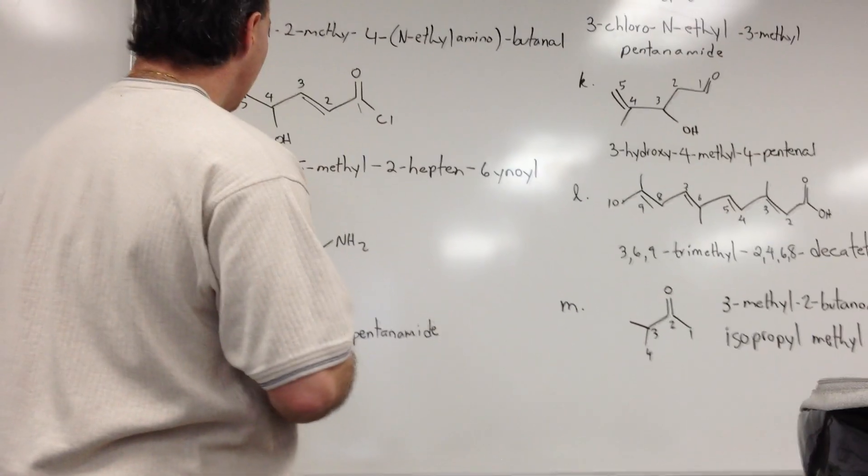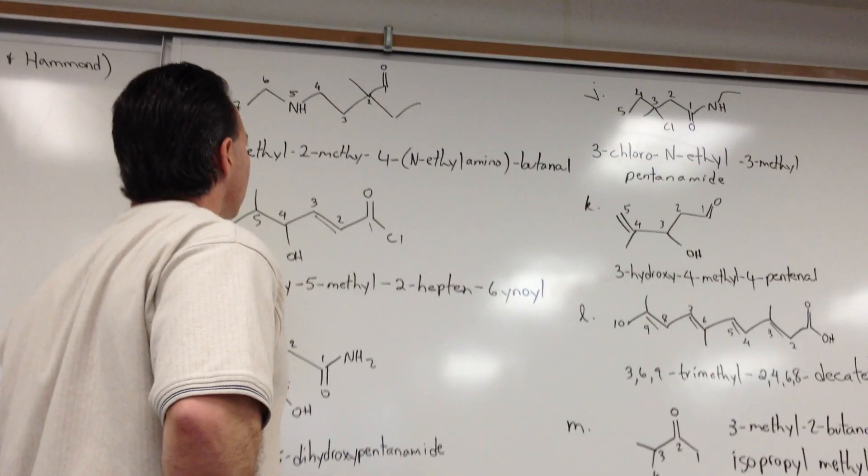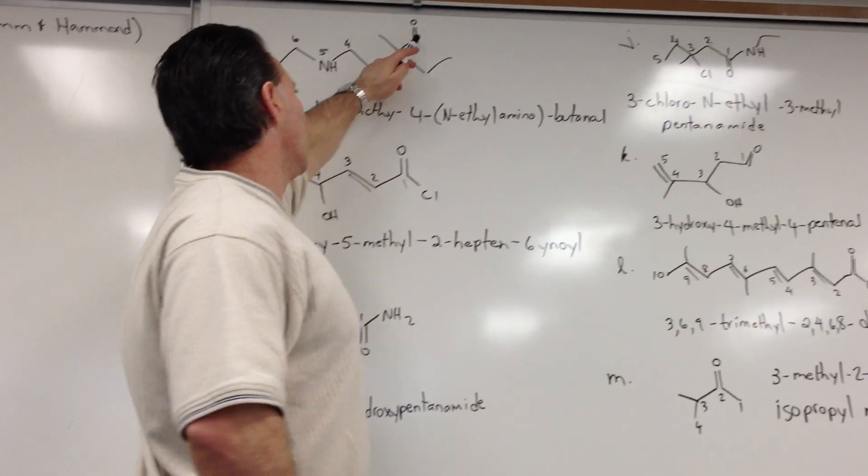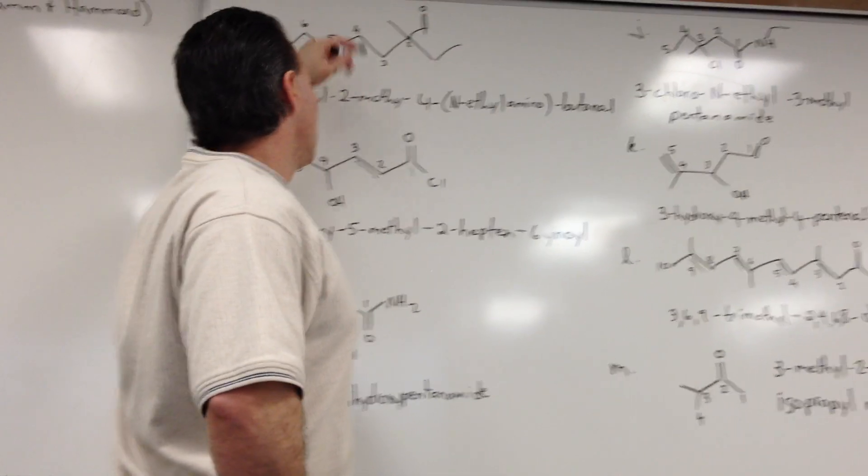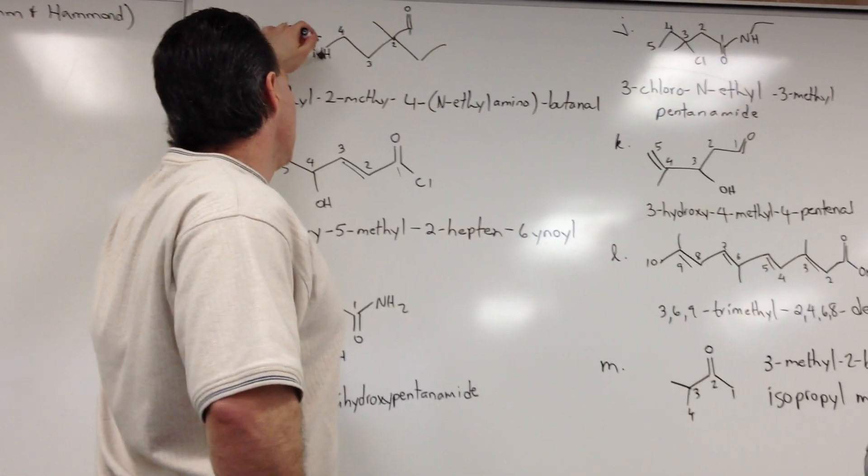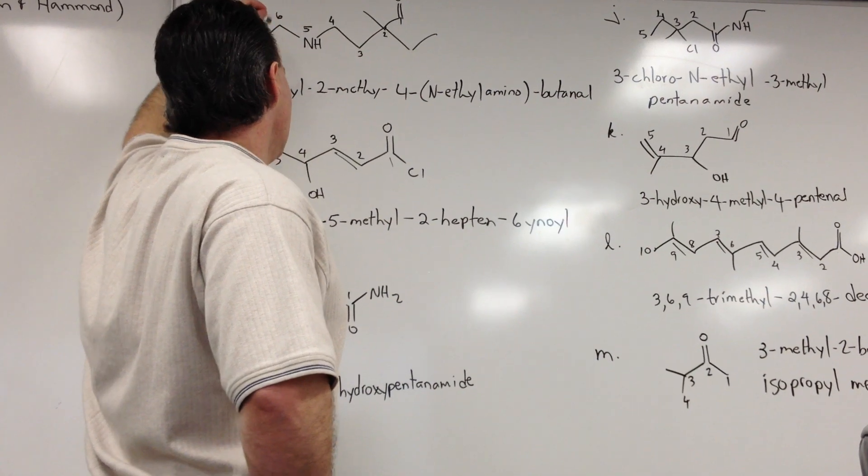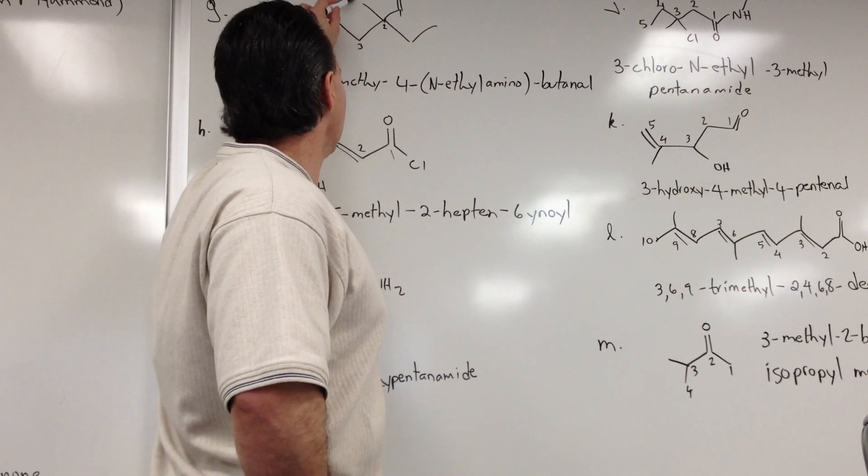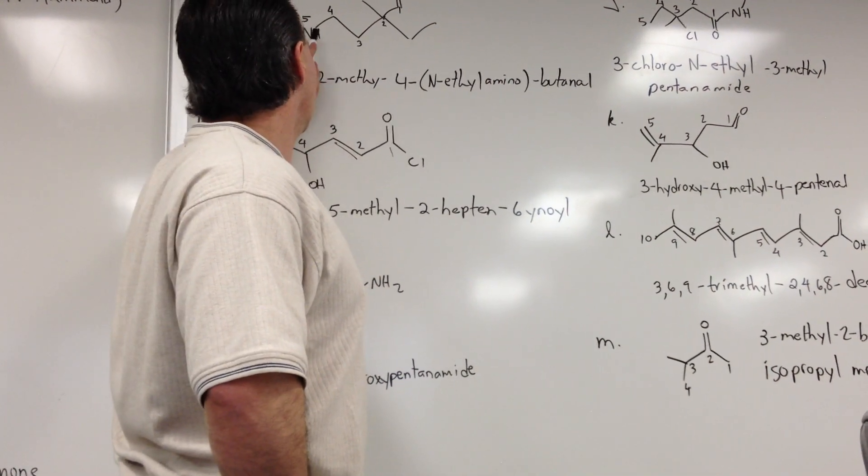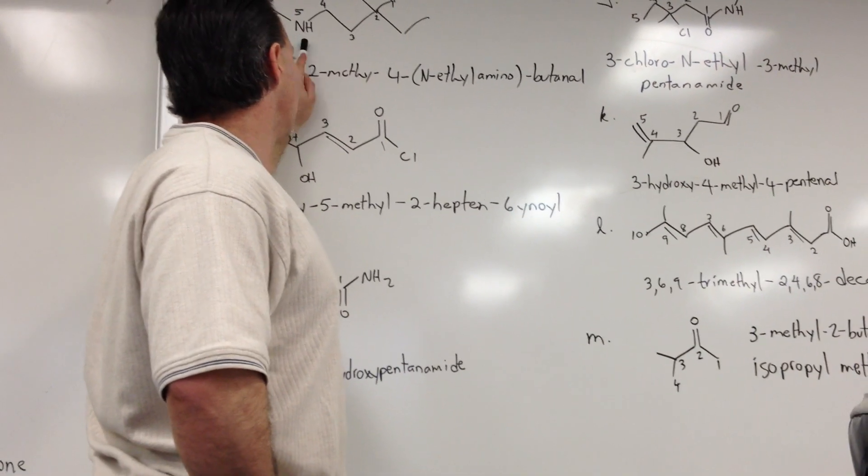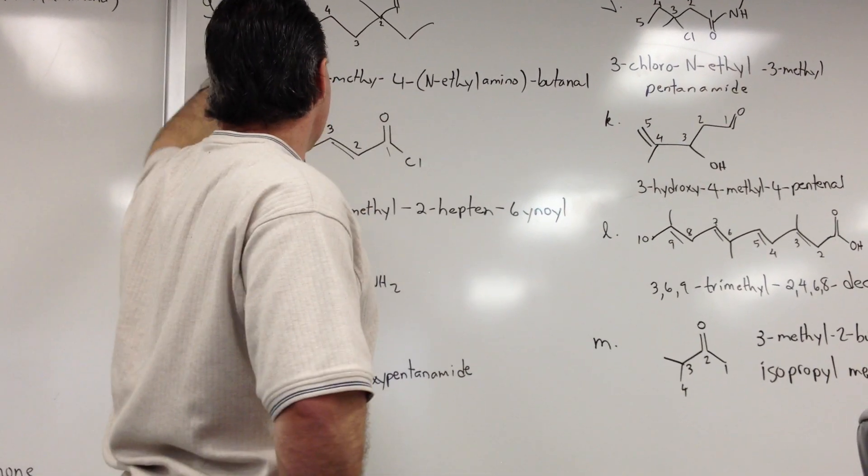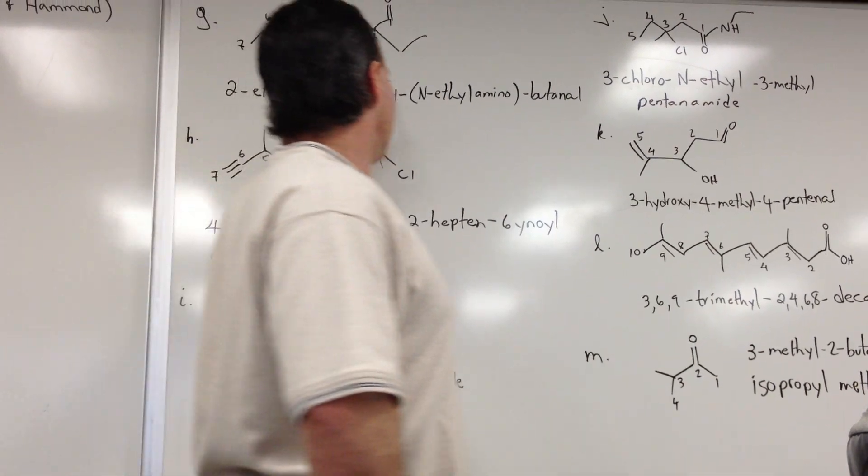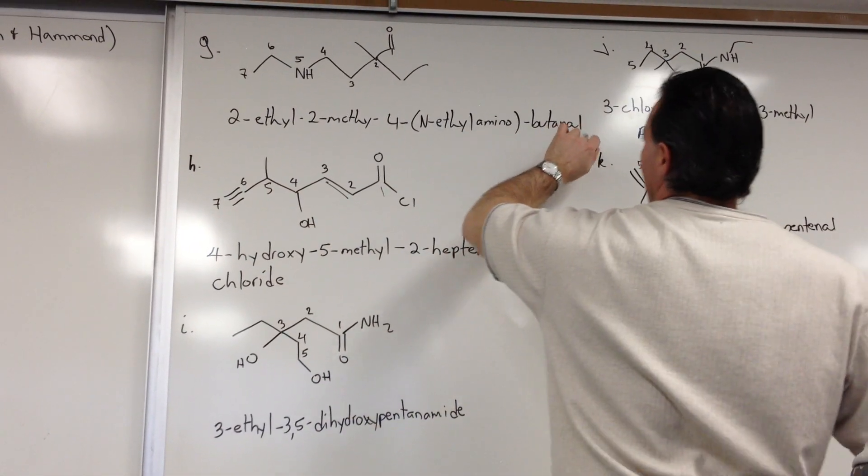G, we have an amine and an aldehyde. Aldehyde is higher priority, so we name it as aldehyde, that is 4 carbons long. And then there's an amino group with an ethyl group attached to it. So it ends up being called 2-ethyl-2-methyl-4, because the fourth carbon has an amino group. And the amino group is ethyl-substituted, so it's N-ethyl, 4-N-ethyl amino, butanal.